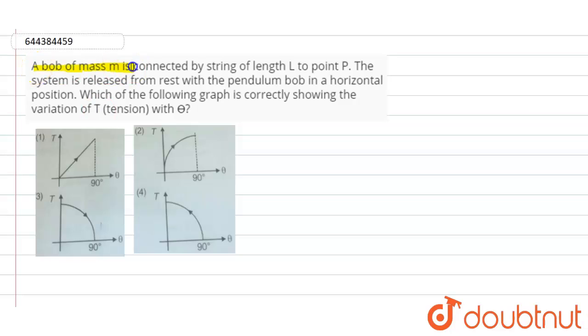So guys, in this question it is given that a bob of mass m is connected by a string of length capital L to the point P. The system is released from rest with the pendulum bob in a horizontal position. Which of the following graph is correctly showing the variation of the tension T with the angle θ?